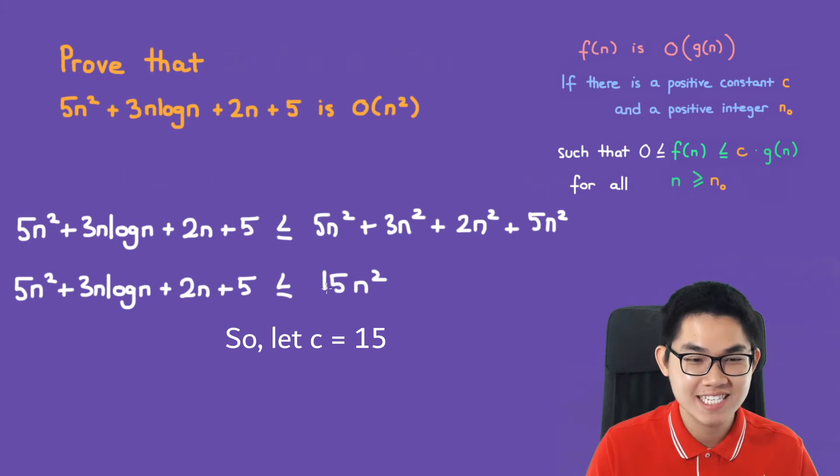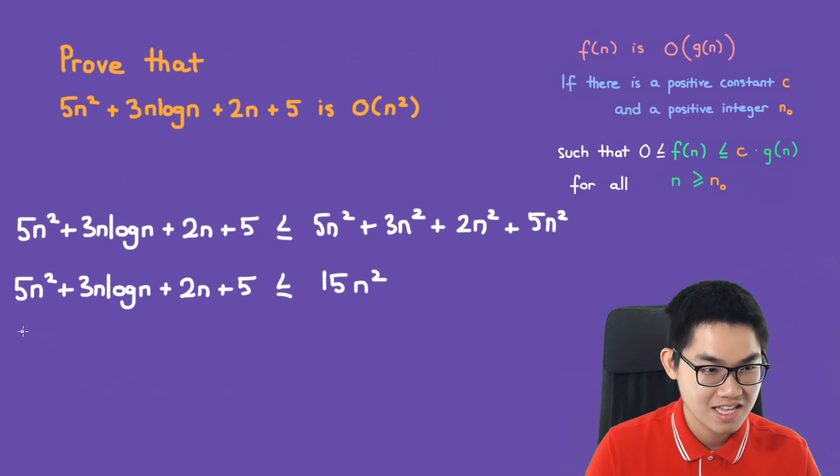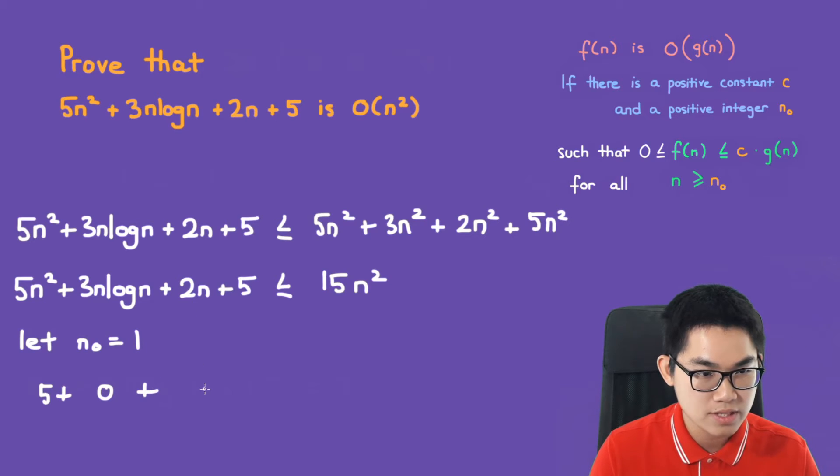So we found a constant C, which is good. We just need to find n naught. Let's try n naught is equal to 1. So plugging in here, 5 times 1 squared is 5, plus 3 times 1 is 3 times log of 1. And log of 1 is 0,